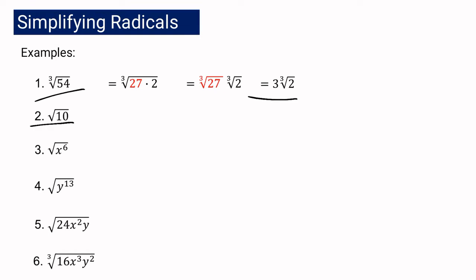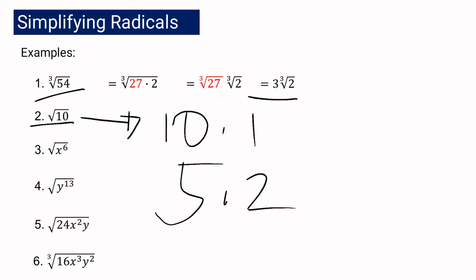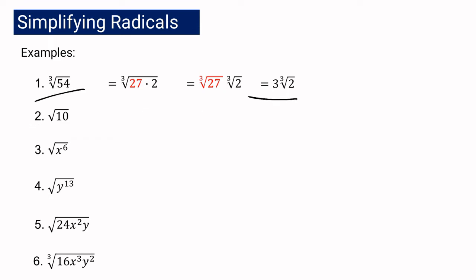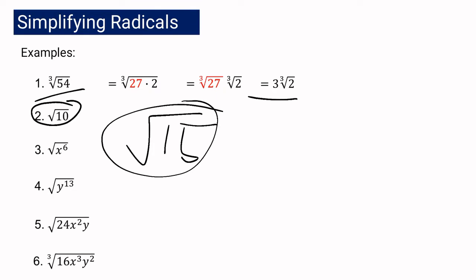For the second radical expression, we have the square root of 10. 10 is not a perfect square. The factors of 10 are only 10 times 1 or 5 times 2. You will notice that these are all not perfect squares. Since 10 has no factor that is a perfect square, it means that the square root of 10 is already in the simplest form. In the same manner, the square root of 15 — whose factors are 5 and 3, none of which is a perfect square — is also already in the simplest form.